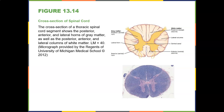Here's a cross section of the spinal cord, which we'll discuss in a little bit. You can see the white matter and the gray matter, and the lateral columns.